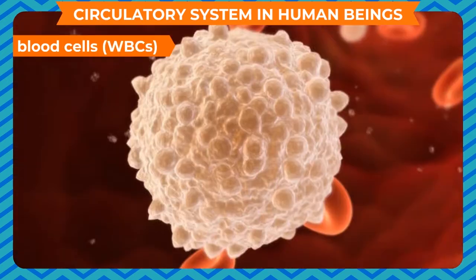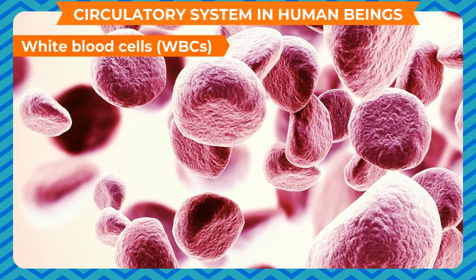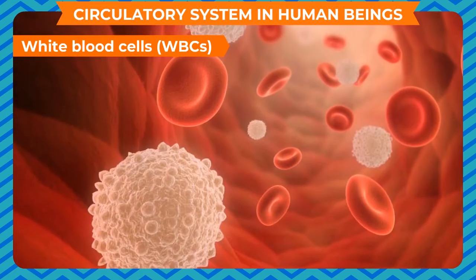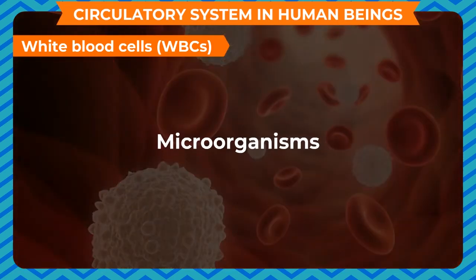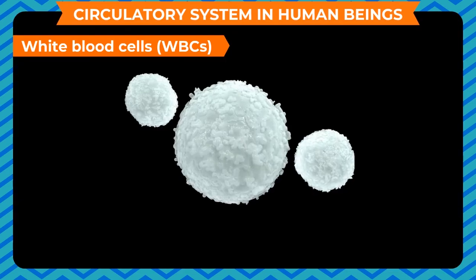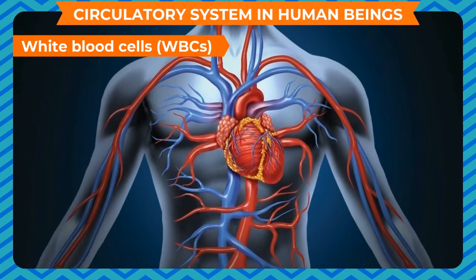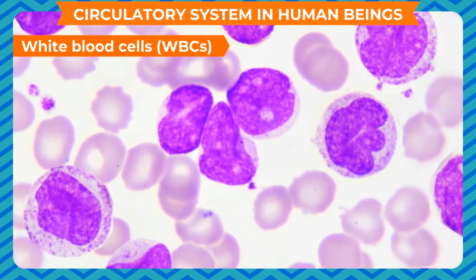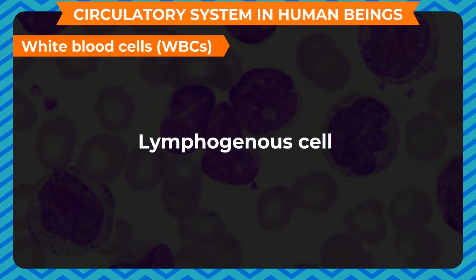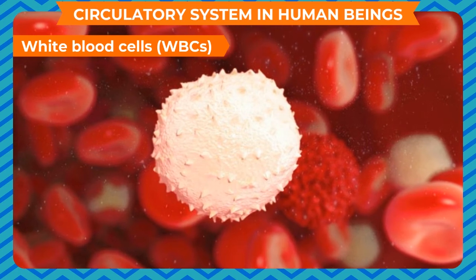White blood cells (WBCs) are the defenders of the body; they defend the body against any kind of infection. There are different types of WBCs having different shapes and lifespans. WBCs defend the body by either engulfing disease-causing microorganisms in a way similar to amoeba, or by releasing certain substances. WBCs can easily change their shape and move on their own, which helps them squeeze out of the blood and reach any part of the body. Leukemia, the uncontrolled production of white blood cells, is caused by cancerous mutation of myelogenous or lymphogenous cells, and is characterized by greatly increased numbers of abnormal white blood cells in the circulating blood.